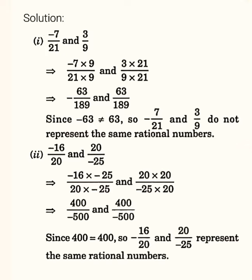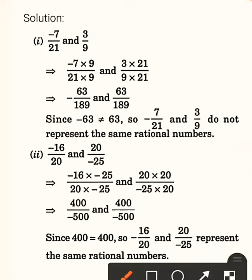The first question is minus 7 upon 21 and 3 upon 9. We will use the cross multiplication method. In this method, you directly cross multiply — the denominator of one part with the numerator of the other part.